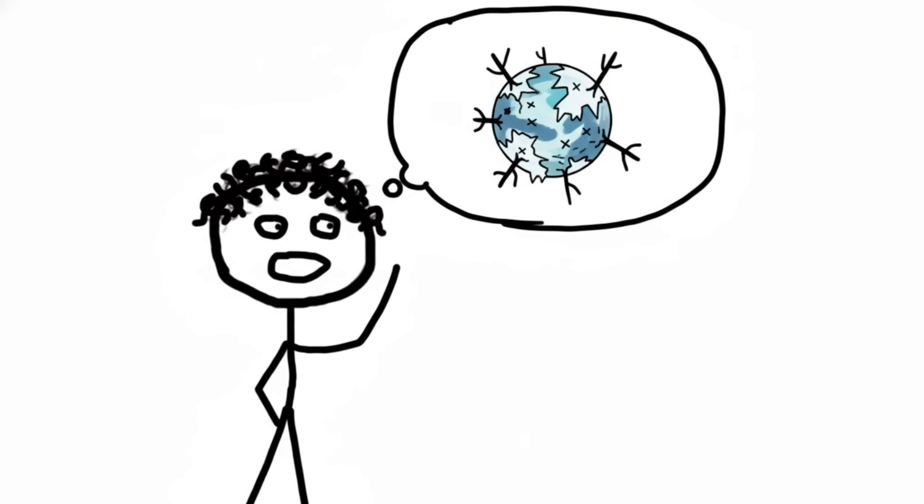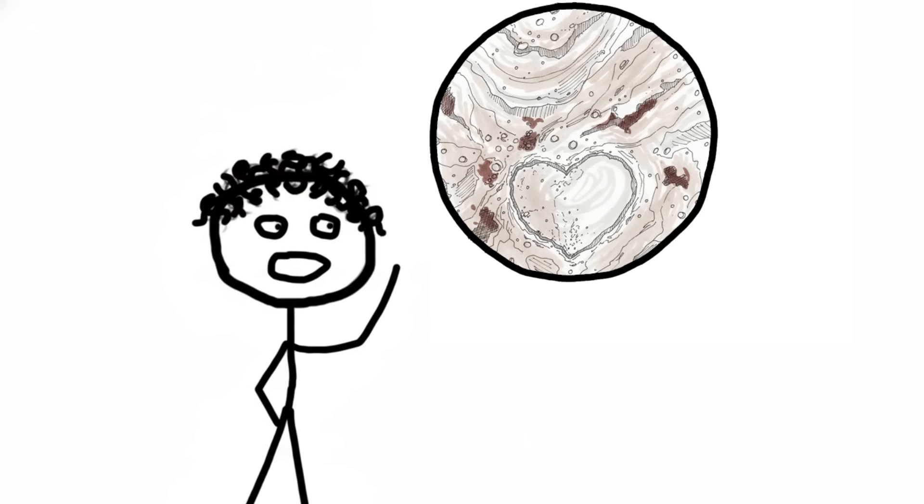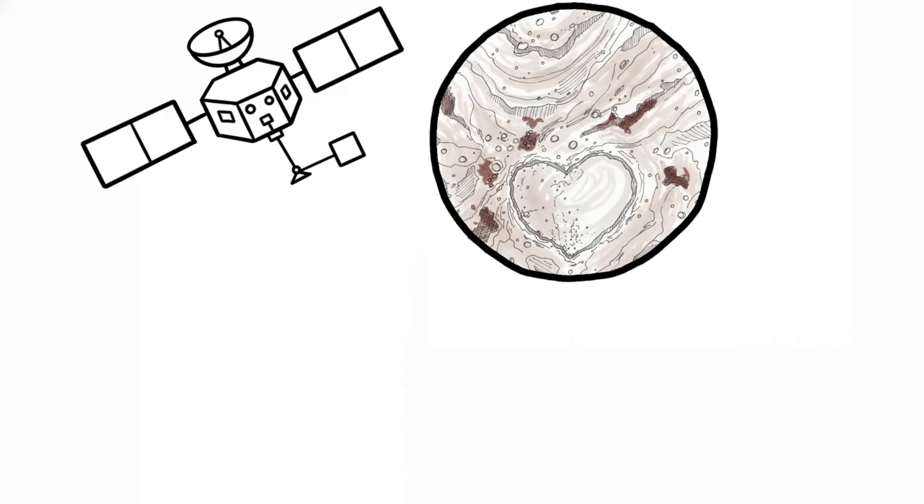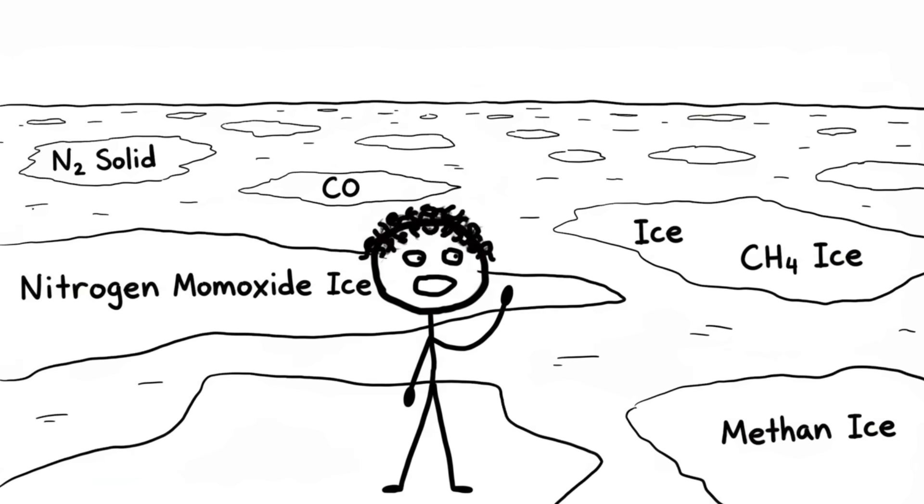Number four, Pluto's beating heart. You'd think a tiny icy rock four billion miles away, officially stripped of its planetary status, would be a dead frozen wasteland. You'd be wrong. Pluto, that cosmic underdog, is apparently geologically active. When the New Horizons probe flew by, it saw a region shaped suspiciously like a giant heart, the informally named Sputnik Planitia, which is a massive plane of solid nitrogen, carbon monoxide, and methane ices.